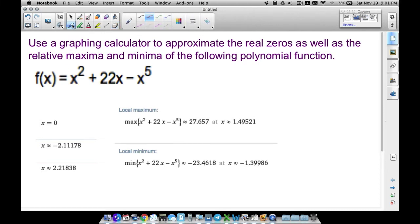In this video we are going to use a TI-84 graphing calculator to approximate the real zeros as well as the relative maxima and minima of the following polynomial function. Here's our function. I already have the real zeros listed here but I'm going to show you how to find them. And then we have our local max. That's our local max, this is our local min. Relative max, local max, relative min, local min - they mean the same thing, just two different ways of saying the same thing.